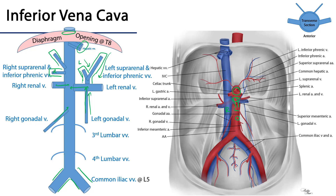Finally, there are four pairs of lumbar veins. The third and the fourth pairs of lumbar veins are direct tributaries into the inferior vena cava,